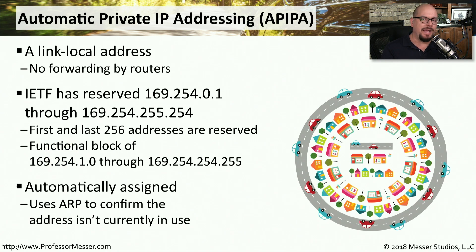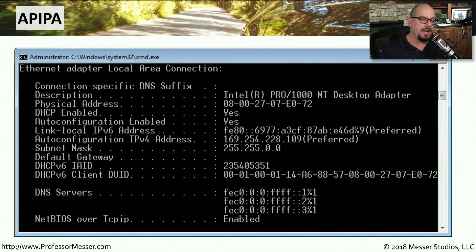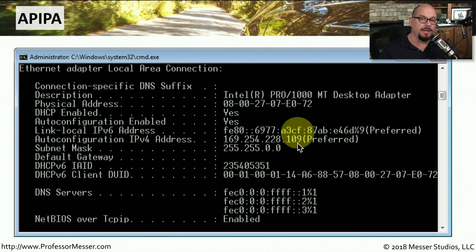This process of assigning an APIPA address is done automatically by the operating system. Before it puts that address onto your workstation, it sends an Address Resolution Protocol, or ARP frame, out to the network to make sure that nobody else is using the IP address it wants to assign. Here's an example of the ipconfig information in Windows for a device that has been assigned an automatic IP address. You can see it says "Auto Configuration IPv4 Address" and the address is 169.254.228.109, which fits into that range of APIPA addresses.